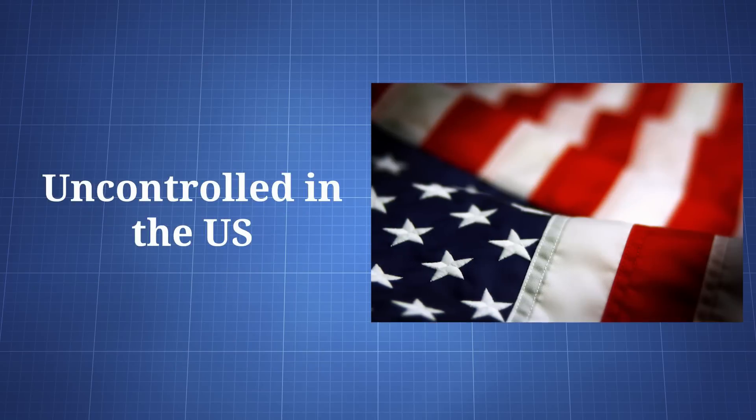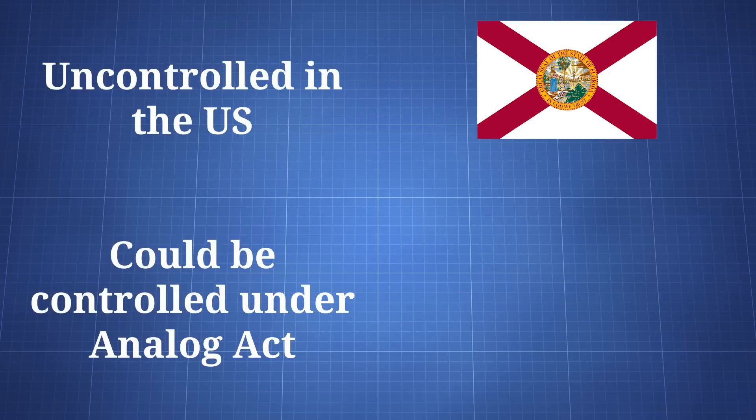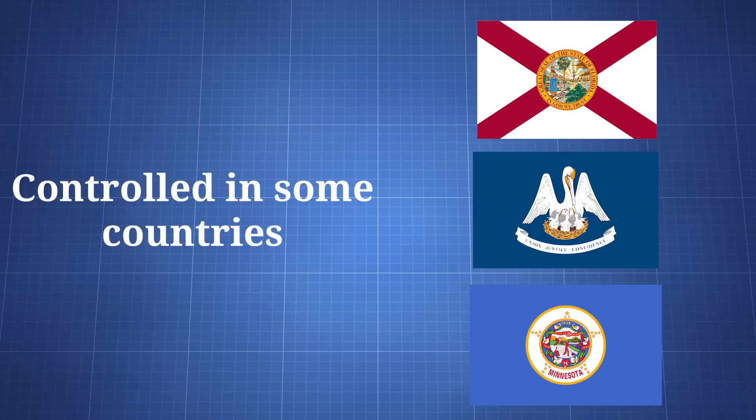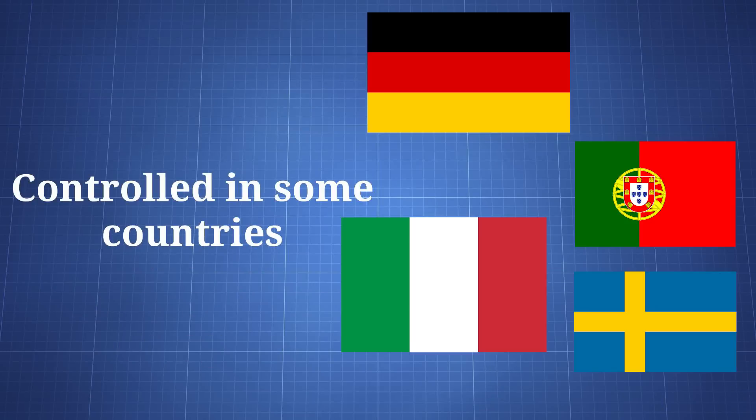The substance is uncontrolled in the US, but it could potentially be viewed as an illegal MDA analog when sold for human consumption. It is controlled in some states, including Florida, Louisiana, and Minnesota. 6-APB is also controlled in Germany, Portugal, Sweden, Italy, and the UK.